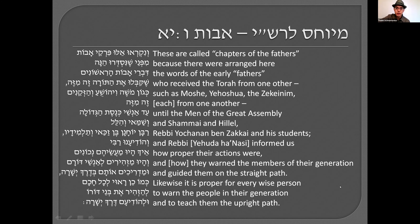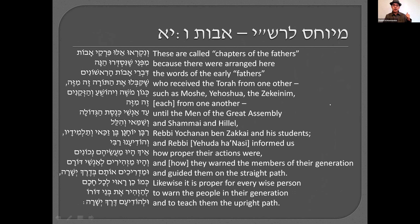As said, it's the Zekinim — but when we say Zekinim here, we mean everyone, not just the 70 Zekinim. This is referring to all of the authors of Pirkei Avos, and they're called Avos here not because they are forefathers like Abraham, Yitzchak, and Yaakov, but because they are leaders of the generation.